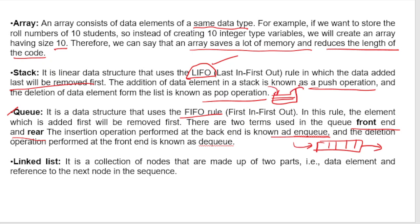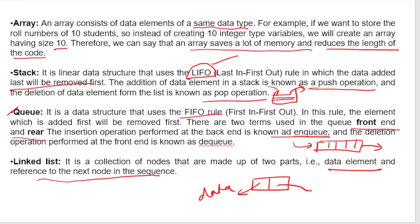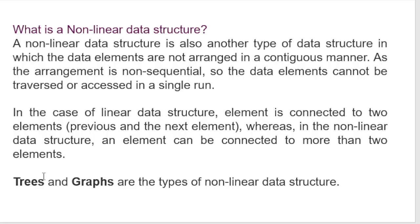Linked list is a collection of nodes that are made of two parts: a data element and a reference to the next node in the sequence. So a linked list has two parts — one part is the data, and the other part is the next node address. These are the linear data structures.